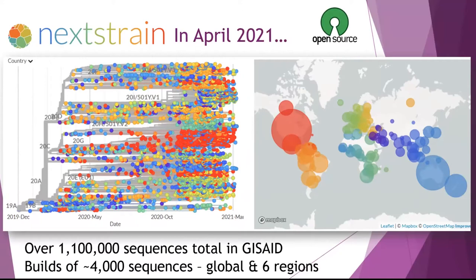We're incredibly blessed because we now have over a million sequences on a database called GISAID, which is where we get our sequences from — which is unprecedented. We've never had this many sequences for a pathogen, let alone one that we didn't even know existed a little more than a year ago. It's an amazing example of what we're able to accomplish with sequencing technology today and open data sharing.